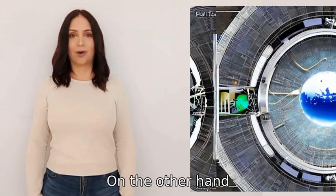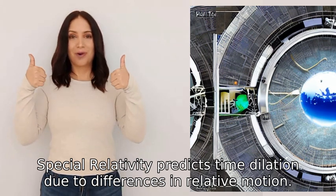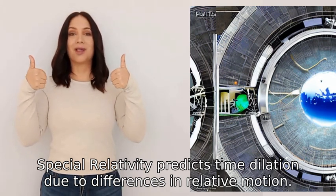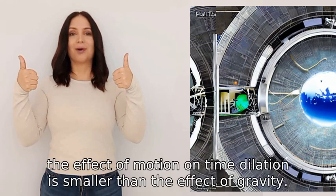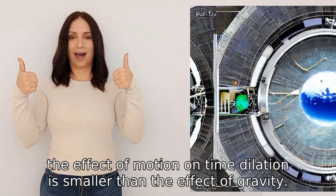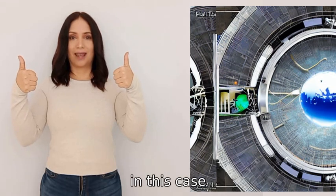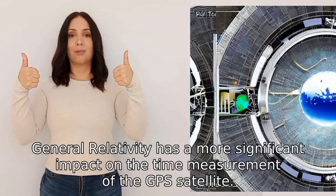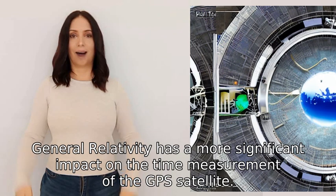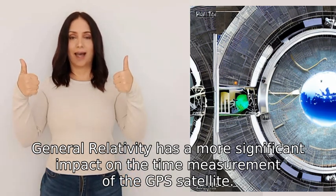On the other hand, special relativity predicts time dilation due to differences in relative motion. However, the effect of motion on time dilation is smaller than the effect of gravity. So in this case, general relativity has a more significant impact on the time measurement of the GPS satellite.